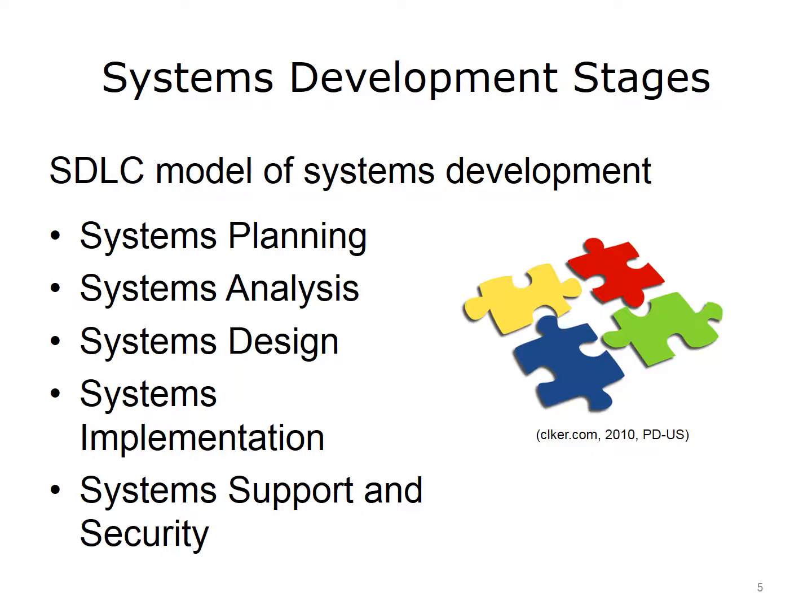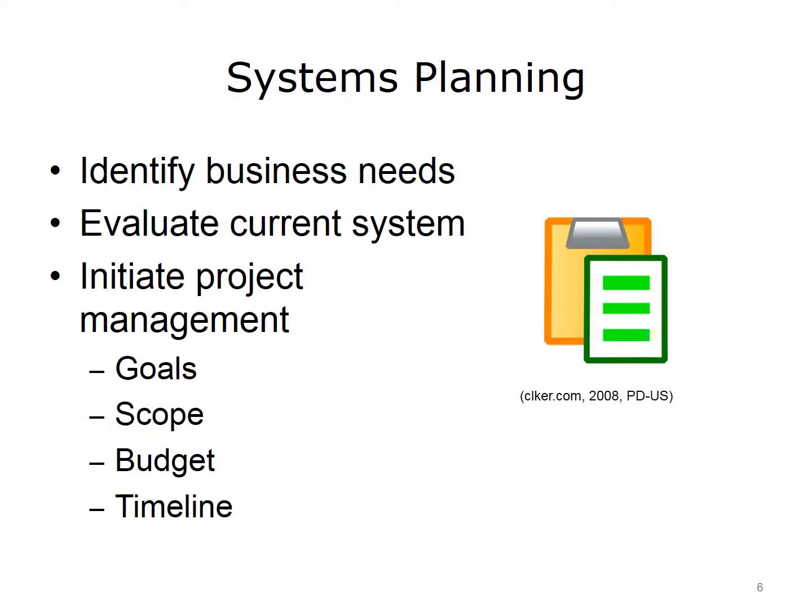Over the next few slides, we will explain each of these stages. The first activity, systems planning, involves the initiation of the information system project. It starts with identifying the business needs that the system will address. If a new information system is to replace an existing one, then the current system is evaluated to determine to what extent it is already meeting or not meeting the business needs. Anything missing will potentially be part of the new system. At this point, the project begins and standard project management goals are determined. The ideas for the new system are narrowed down to a set of features. The budget for the project is set, along with an initial timeline of development.